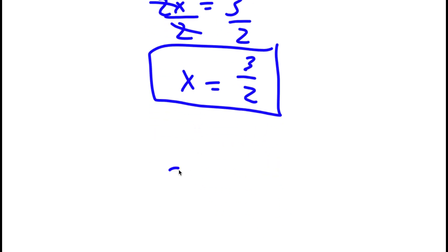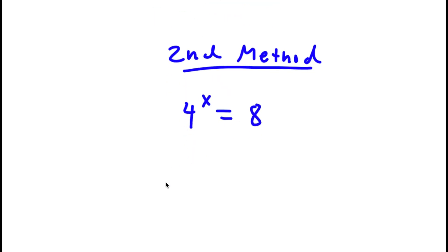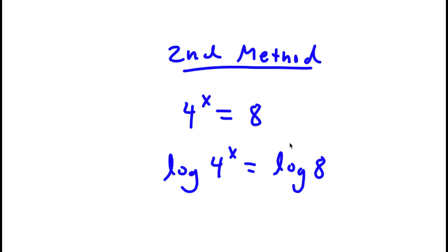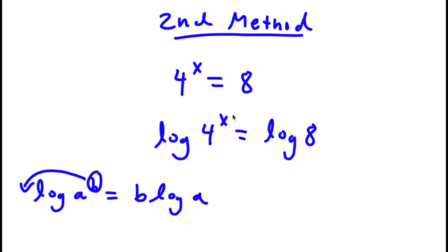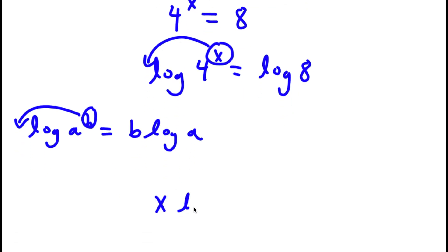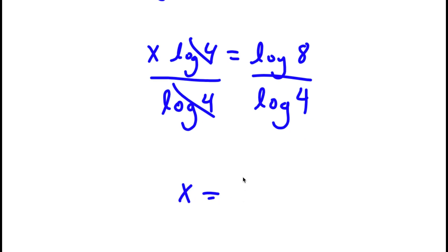There's actually a second method of solving this problem. I first start with 4 to the power of x is equal to 8. But this time, I'm going to take the log on both sides. So now I have log of 4 to the power of x is equal to log 8. Now, if I have something in the form log a to the power of b, I can move the exponent b to the front, so this equals b times log a. So for log 4 to the power of x, I can move x to the front: x times log 4 equals log 8. I can simply divide both sides by log 4. These two cancel out, and I'll be left with x is equal to log 8 over log 4.